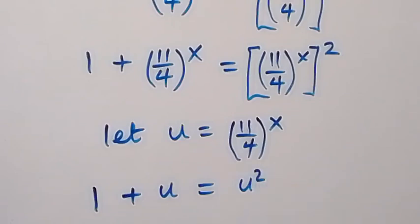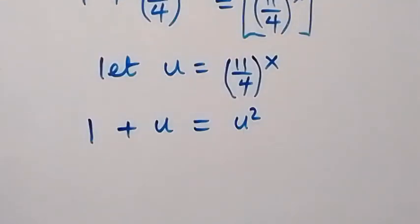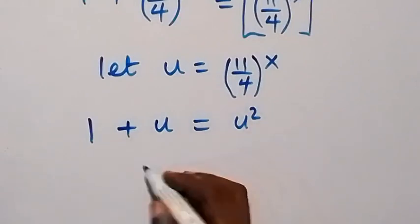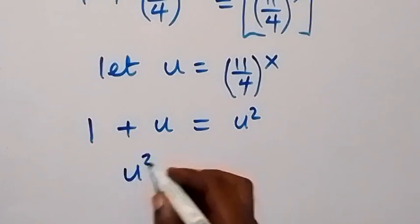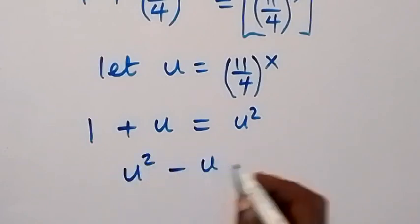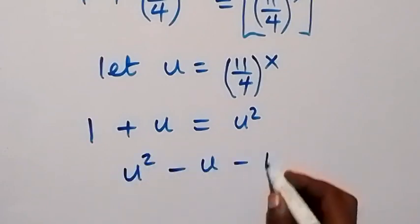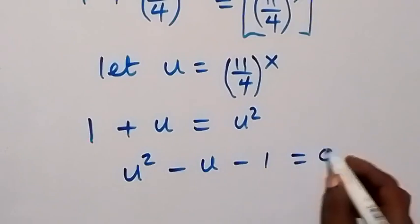We use this to form a quadratic equation. Rearranging everything to one side, this becomes u squared minus u minus 1 equals 0.